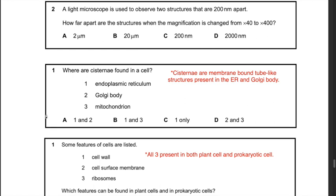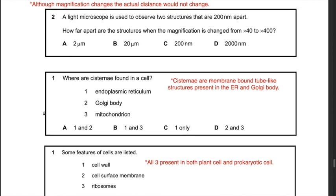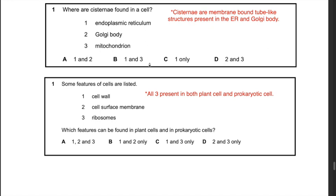Next question: a light microscope is used to observe two structures 200 nanometers apart. How far apart are they when magnification is changed from 40 to 400? Although magnification changes, the actual distance between two structures does not change — magnification only enlarges the image size. Therefore the structures remain 200 nanometers apart regardless of magnification. The answer is C.